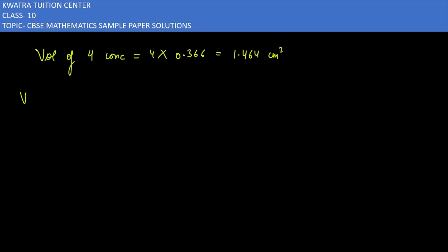Volume of four cones would be 4 times 0.366, which will give you 1.464 cm³. Now what do you want to make? Volume of wood will be equal to volume of cuboidal box minus volume of four cones.